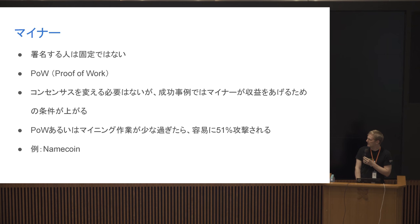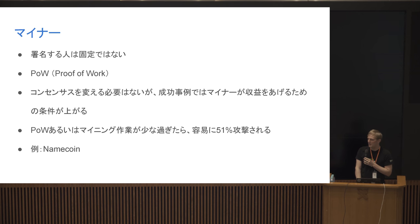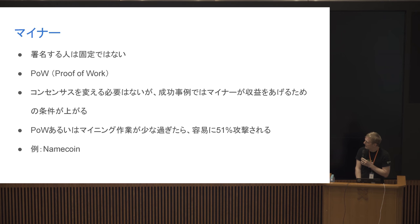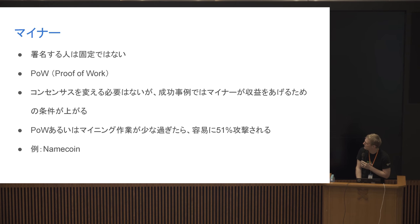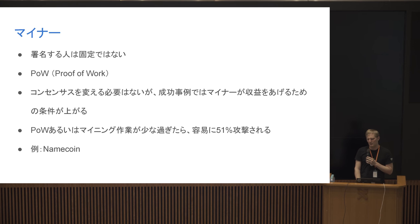One problem is if the sidechain is not mined enough. If only, say, 2% of Bitcoin miners merge mine the sidechain, then it's easily attacked — you can reorg pretty much any time. An example of a fairly successful one is Namecoin. It's not used a lot, but it is merge mined a lot regardless. Namecoin is the DNS replacement sidechain that, as far as I know, doesn't have much practical use, but it's a good example.